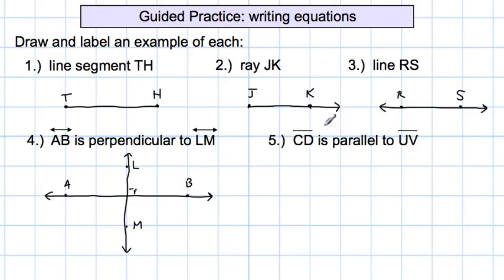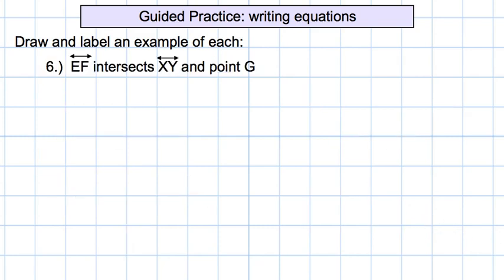On this one, it talks about line segments because there's no arrows on the top of these. So segment CD is parallel to segment UV. First, I'm going to draw my line segment CD. The line segment goes in between the two points, not through them. Then parallel to that, I'm going to draw another line segment U and V. These parallel lines don't have to be equal in length. They just have to be running next to each other, same distance apart forever. These things are parallel to each other because they will never come together.